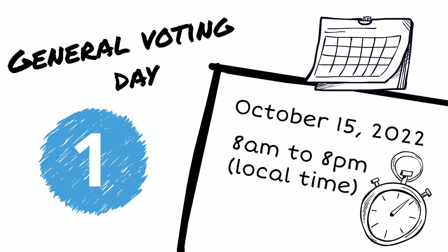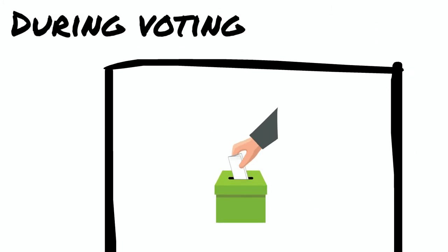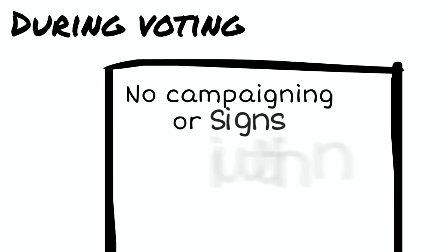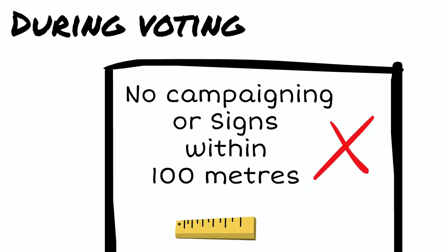Your local government will provide you with information about the location of voting places. Candidates may only be present at a voting place to cast their ballot, but must not campaign or place signs within 100 meters of a voting place during special, advance, or general voting. It is an election offense to campaign within 100 meters of a voting place during voting proceedings.